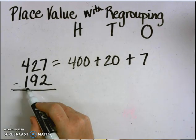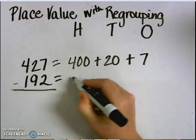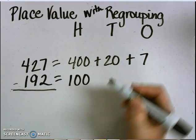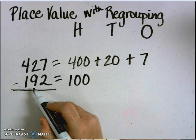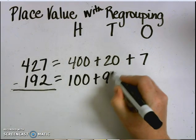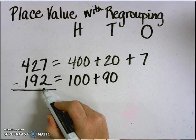In the number 192, there are 100, nine tens, or 90, and two ones.